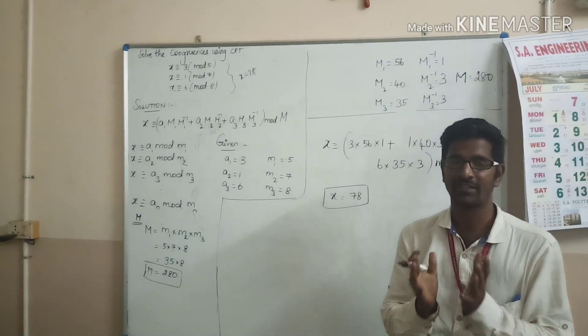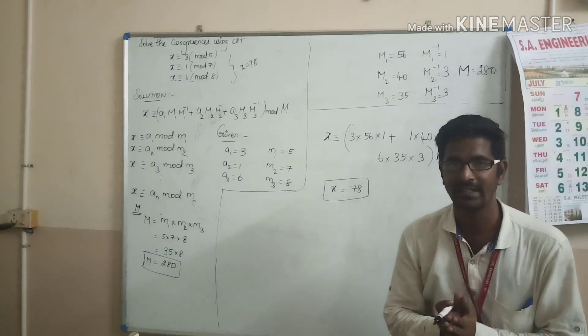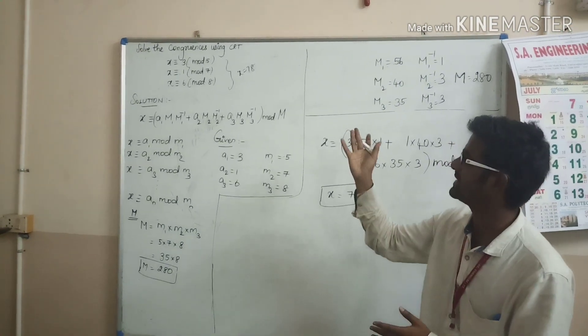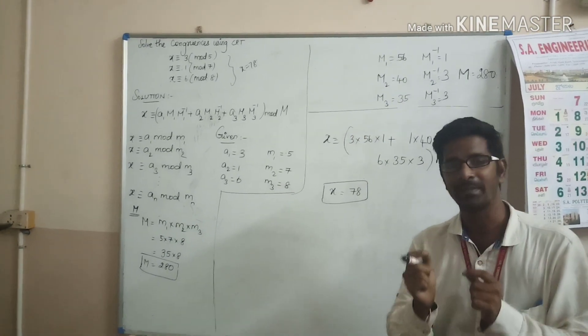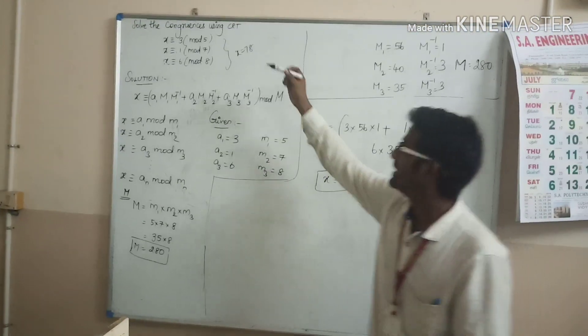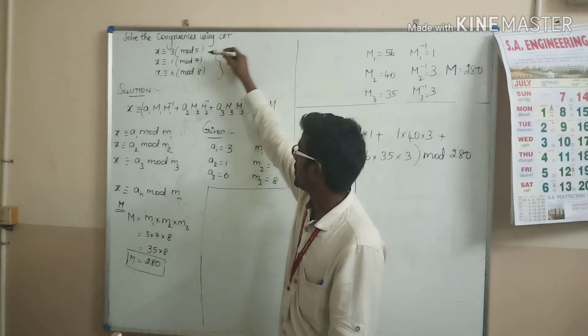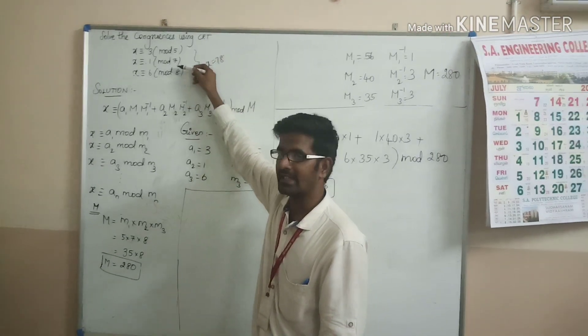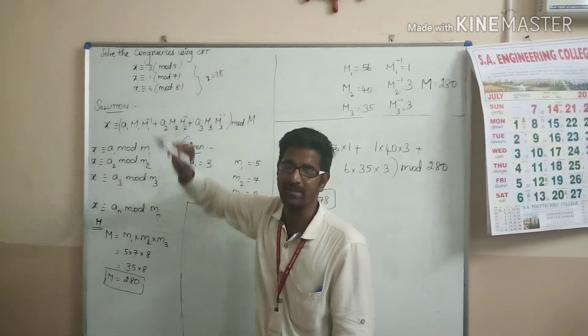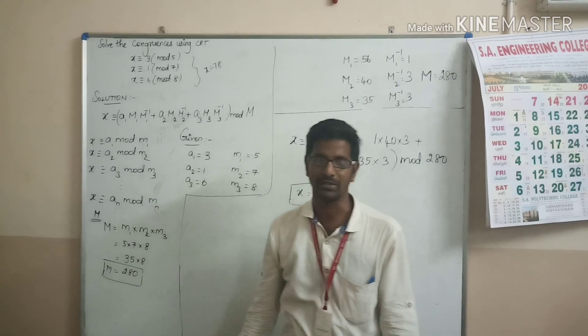Thus, we have solved the final value of x using the Chinese Remainder Theorem. Again, I want to remind you: this can be solved only when the three moduli are relatively prime. Thank you.